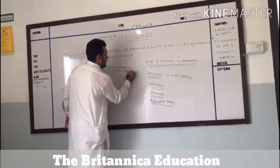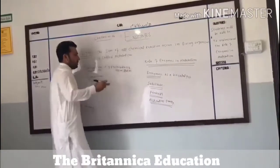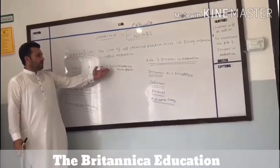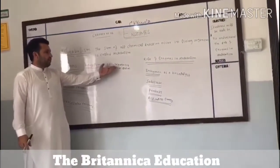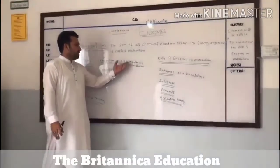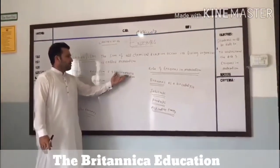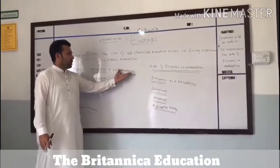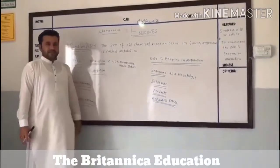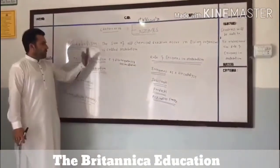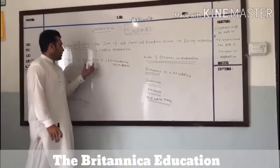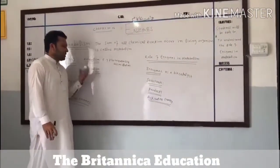In photosynthesis, carbon dioxide, water, and sunlight are used to produce glucose. Glucose is a large molecule, so photosynthesis is an example of anabolism.